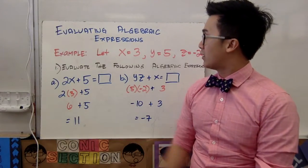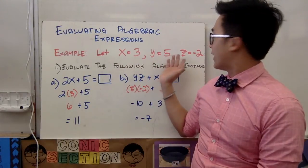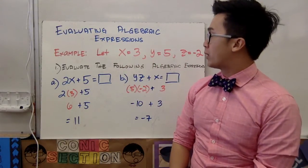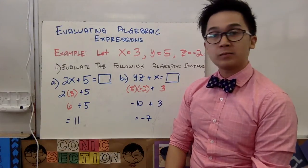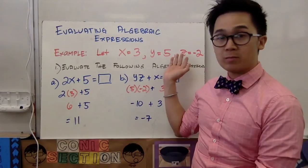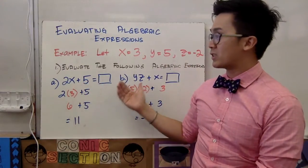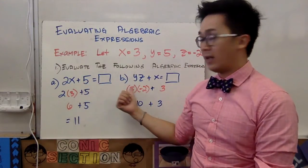We have here x equals 3, y equals 5, and z equals negative 2. We're going to evaluate or solve the following algebraic expressions by substituting the value of the variables that we have here on the board to our algebraic expressions here on letter A and letter B.